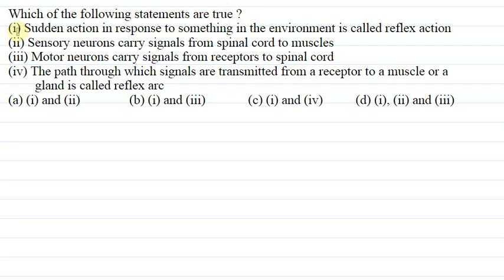Statement first: sudden action in response to something in the environment is called reflex action. Second: sensory neurons carry signal from spinal cord to muscles. Third: motor neurons carry signal from receptor to spinal cord. Fourth: the path through which signals are transmitted from receptor to a muscle or a gland is called reflex arc.